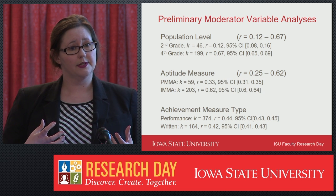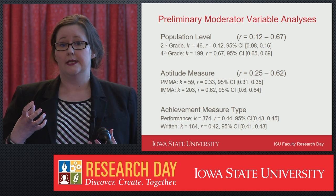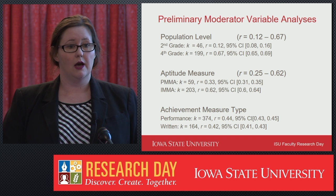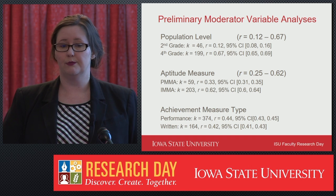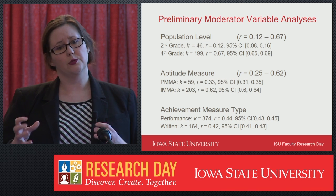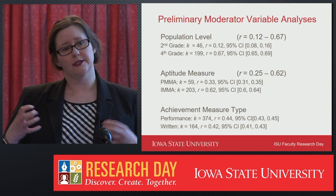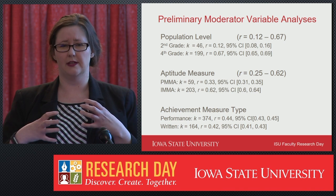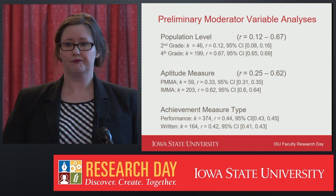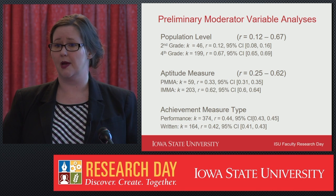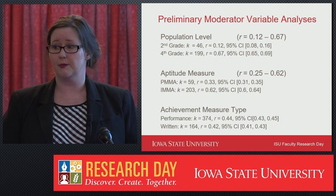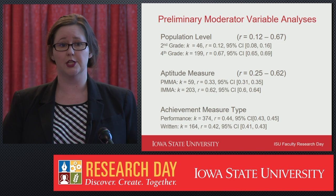Something else that has come out of this is that we haven't been looking in America at continuing to develop these aptitude measures beyond 1980. So they're very outdated. We're doing a lot more development outside of America, but in America we're still kind of stuck. And of course, achievement measure type matters. The biggest things to come out of it so far: we need to keep looking at this. It's something that everybody cares about and that's important for education.